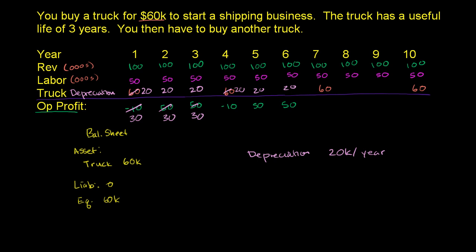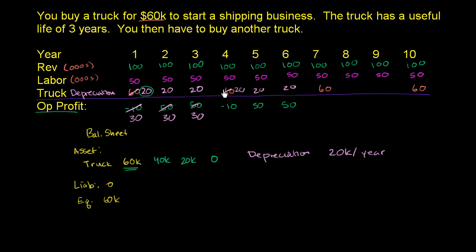Now what does depreciation do to our balance sheet? At the beginning of year one, we had a truck worth $60,000. At the end of year one, because we're depreciating the value of the truck on our balance sheet — we took a $20,000 depreciation expense — the value of the truck goes from $60,000 to $40,000. At the end of year two, it goes down to $20,000. At the end of year three, it goes down to zero, and then we go buy another truck, so we go back to $60,000 and keep going. The cool thing about this is it makes the expense very consistent, and actually more consistent with what our business is actually doing.